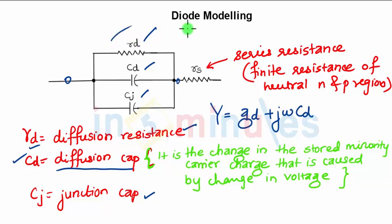This is called the equivalent model of the diode. And what is RS? RS is the series resistance, which is finite because it is coming into picture because of the finite resistance of neutral N and P regions.